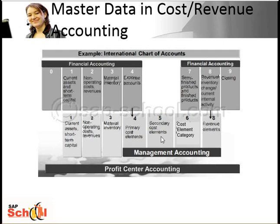Secondary cost elements have no corresponding GL accounts in FI. Revenue elements are used to record revenues from FI in management accounting in a similar way to primary cost elements. Again, the revenue account must already exist in FI. Revenues can be recorded only statistically in cost center accounting. Each cost element is allocated a cost element category in its master record.